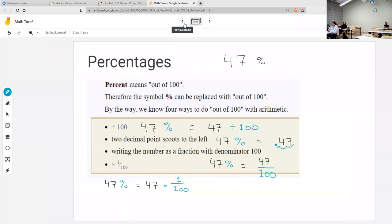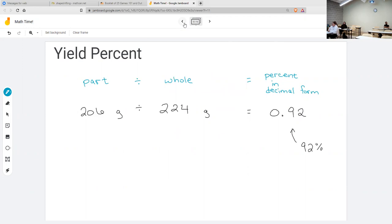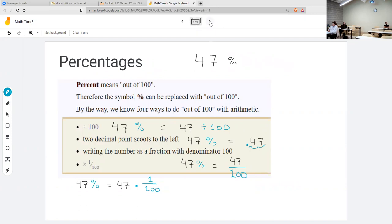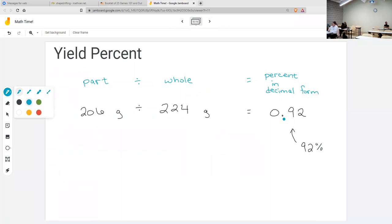What we did so far, when we're doing a division part divided by whole, and when we got a decimal point, then we were doing the opposite of the decimal point scoots. If putting a percent, like getting rid of a percent sign means we go to the left two spaces, then putting a percent sign on means we have to go to the right two spaces. That's to be fair.